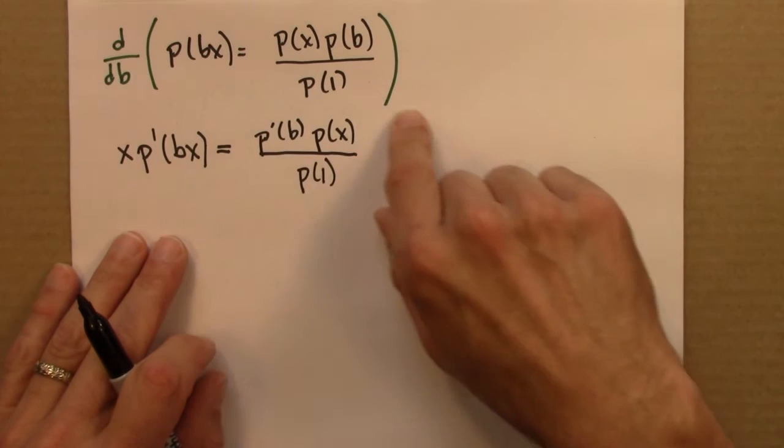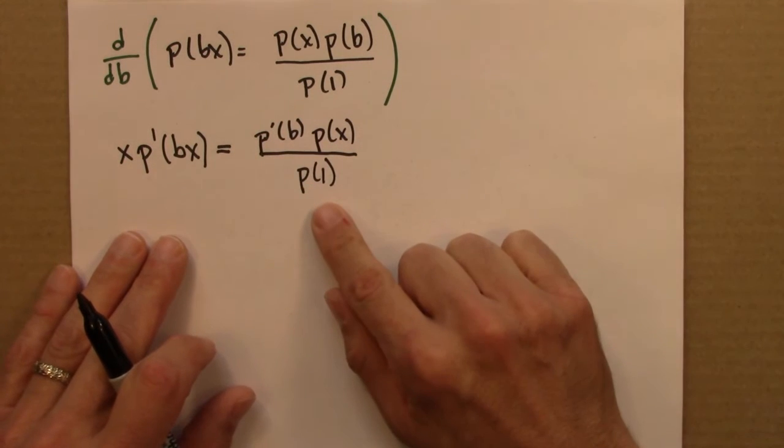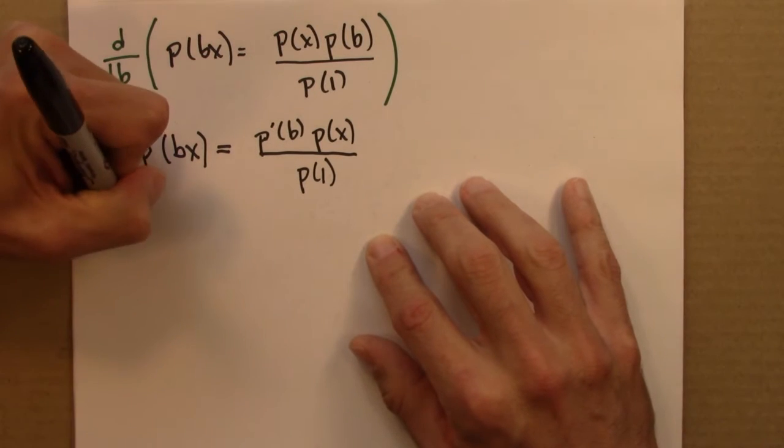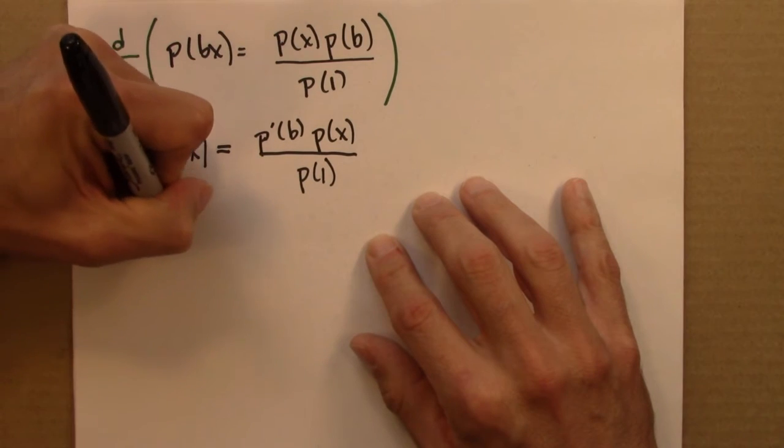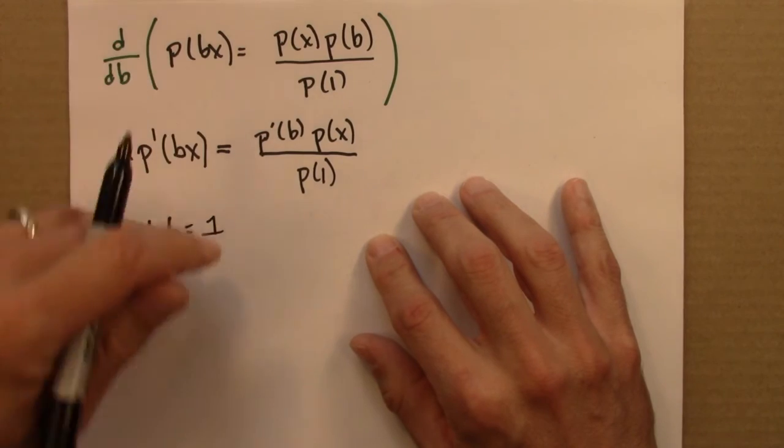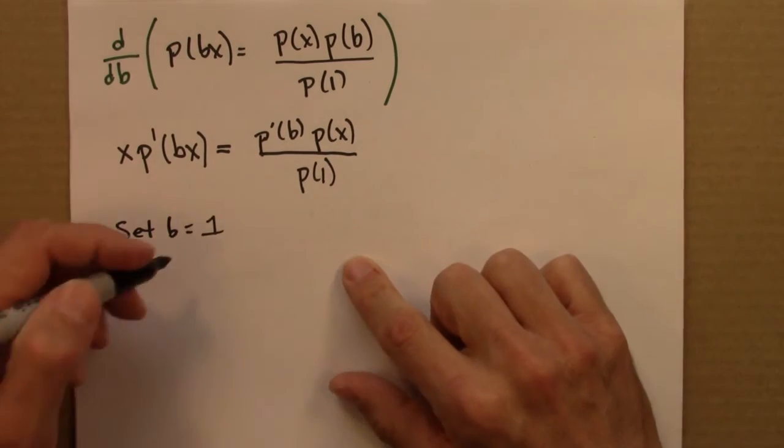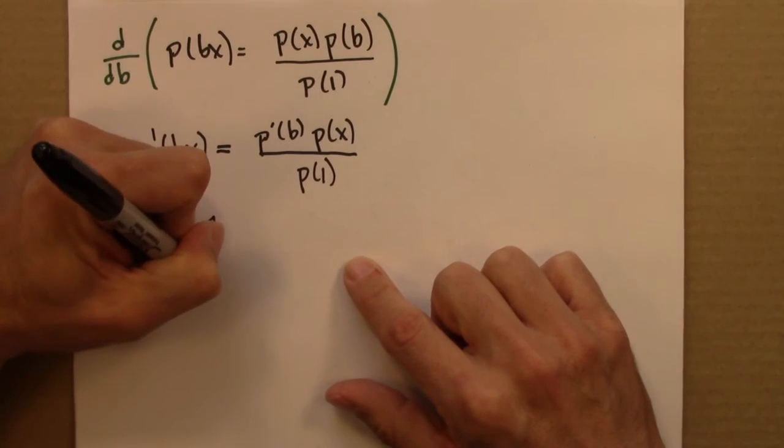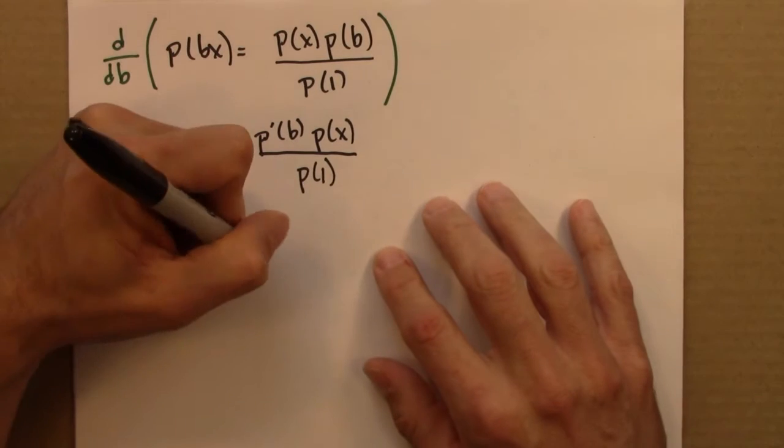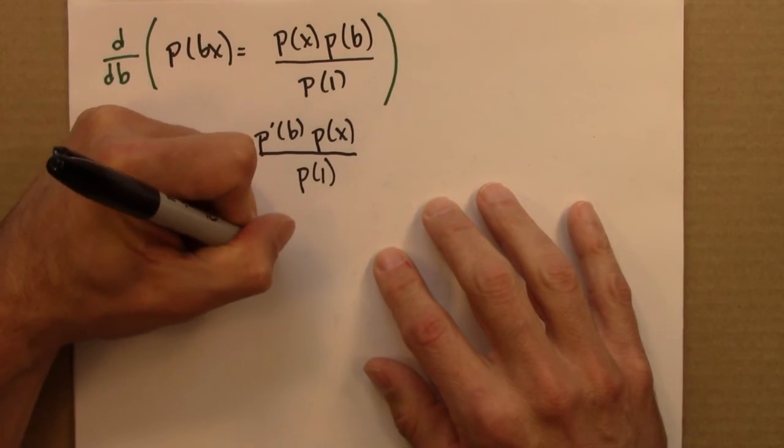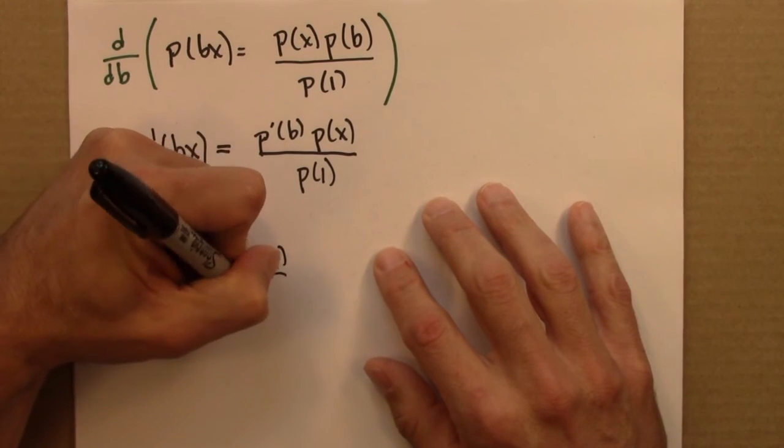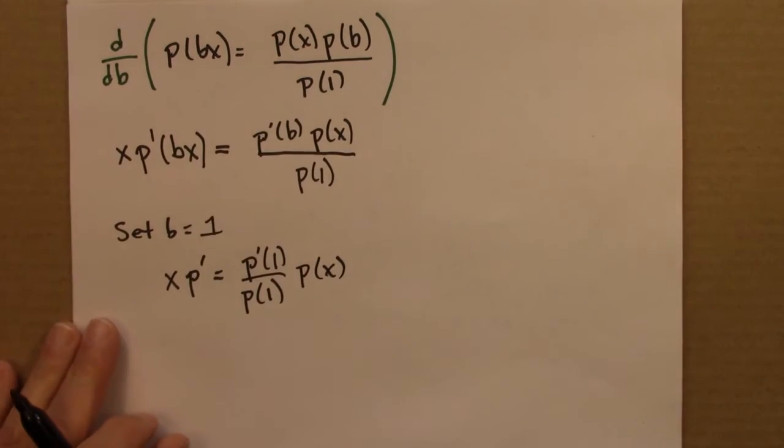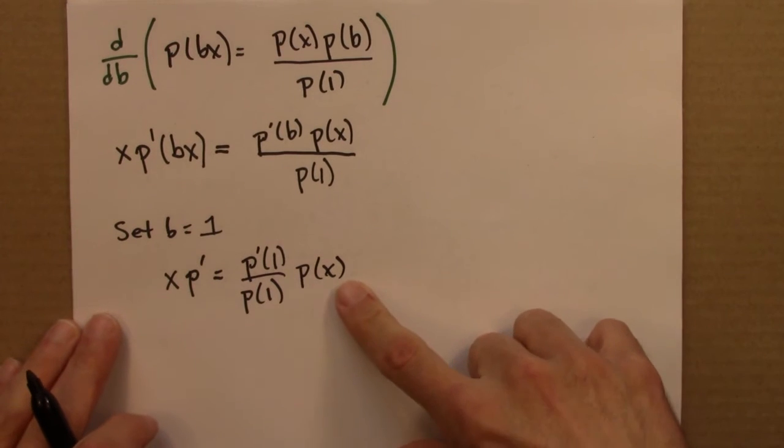So now this equation is true for any B. So it has to be true for B equals 1. So I'm going to set B equals 1. And let's see what we get. So this says that x P'(1) equals P'(1) over P(1) times P(x).